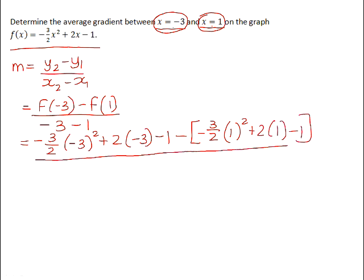That will all be divided by -4. Negative 3 subtract 1 is -4.